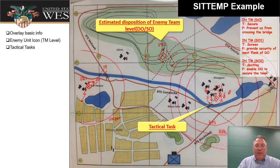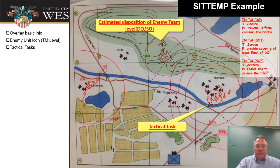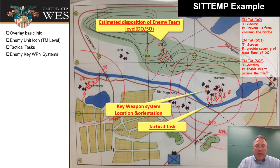Where do we think they're going to go? We've got to have the symbol for the tactical tasks that they're going to do. You can see on here we've got an enemy task around each of them — whether they're screening, trying to destroy, or secure an area.